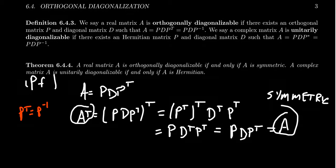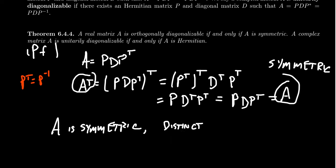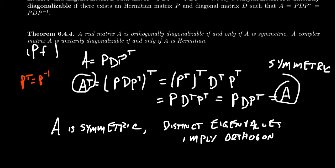The reverse direction is a little harder, but we've seen a lot of the important pieces. If our matrix is symmetric, what we've seen in a previous theorem — theorem 6.4.1 — is that distinct eigenvalues imply orthogonal eigenvectors. That is, eigenvectors associated to different eigenvalues will be pairwise orthogonal to each other.